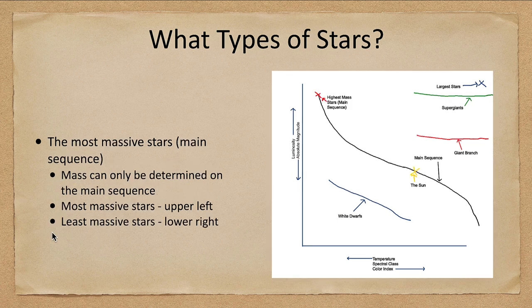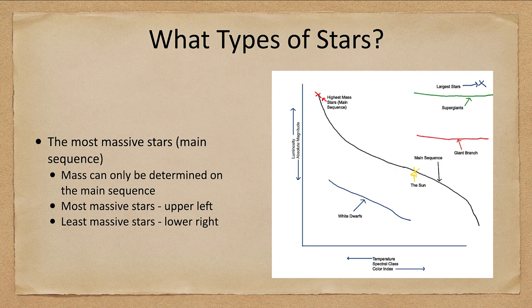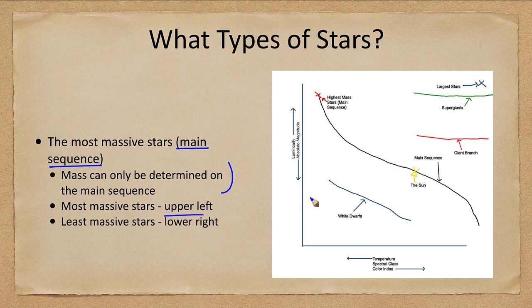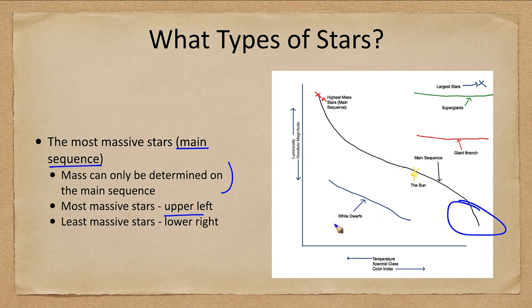Now we can also learn something about the masses of stars, but only those on the main sequence. So it does not apply to anything else other than those that are on the main sequence. The most massive stars are in the upper left. The lowest mass stars would be down in the lower right.